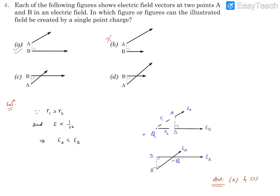So the vector should have a less length at A, more length at B, which will be in the case of C. So option C will be again matching.